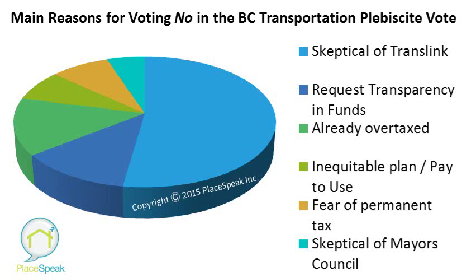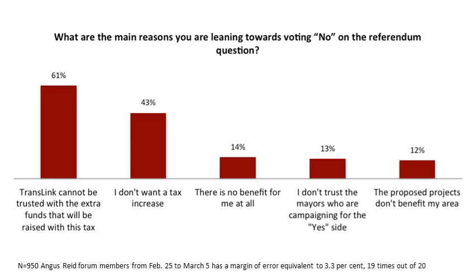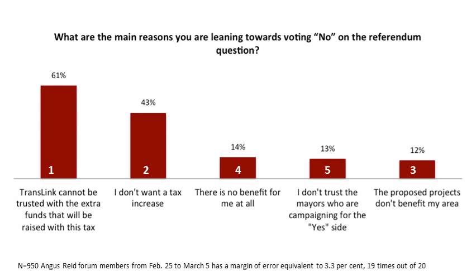What about the reasons for voting no in the transportation consultation site? The no side seemed equally passionate and shared the same values as the pollster panels. There was skepticism, resentment, confusion, and doubt — all emotions ran quite high in the PlaceSpeak discussion forums. The results almost mirrored those of the pollsters. For PlaceSpeak, the order of sentiment was: TransLink cannot be trusted, I don't want a tax increase, the proposed projects don't benefit my area, there's no benefit to me, and I don't trust the numbers.